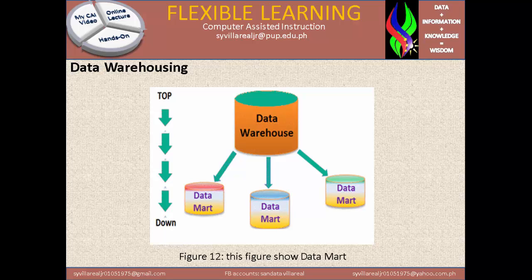Figure 12 shows the data mart. In the data warehouse, you get a sub-part of it and make sure it is complete, because the data mart must gather and integrate all of the data in its area — for example, all price data must be included so you can have an analysis and a decision. This is what we call the top-down approach.